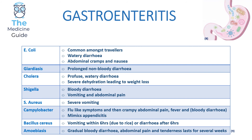Campylobacter causes flu-like symptoms followed by crampy abdominal pain, fever, and bloody diarrhoea, and can mimic appendicitis. Campylobacter can also lead to Guillain-Barré syndrome, a neurological condition. Bacillus cereus causes vomiting within six hours of eating rice, or diarrhoea after six hours — if an exam question asks for the organism with the shortest incubation time, Bacillus cereus is the answer. Amoeba leads to gradual bloody diarrhoea, abdominal pain, and tenderness lasting several weeks.